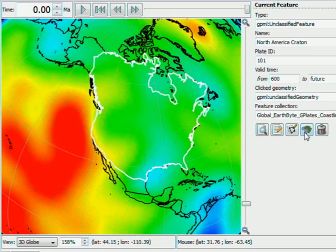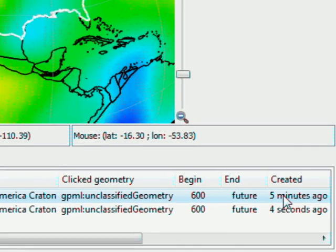When cloning a feature, it can be hard to differentiate between the original feature and the cloned feature. To help with this, a creation time is now displayed in the clicked feature table.